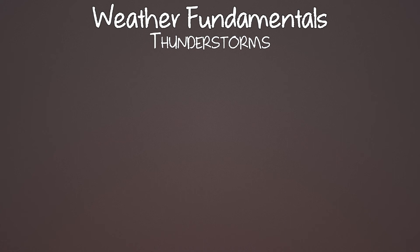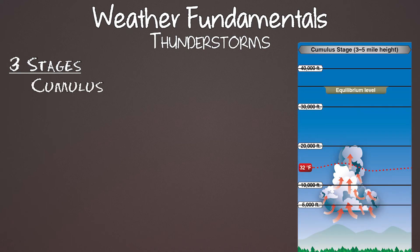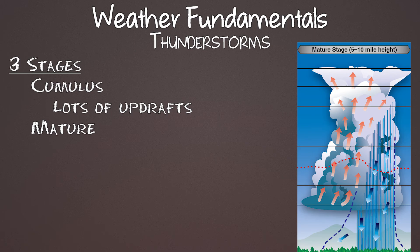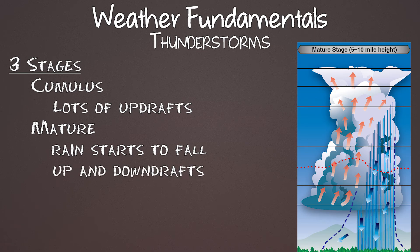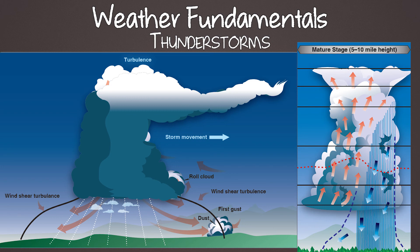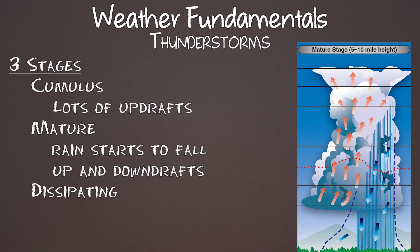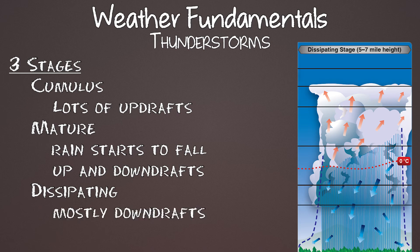Thunderstorms have three stages in their life cycle. The cumulus stage is where unstable moist air rises and increases the vertical height of the cloud, with strong updrafts preventing moisture from falling — mostly updrafts at this stage. The mature stage happens within about 15 minutes: water drops get too heavy for the updrafts and start falling as rain or hail. This is the most violent period — you still have updrafts but also downdrafts, with warm air rising and cold moist air falling, creating lots of turbulence. When updrafts slow at the top, the cloud spreads into an anvil shape — the direction the anvil points shows where the storm is moving. Finally, the dissipating stage is where downdrafts replace all updrafts and the storm can't sustain itself anymore.